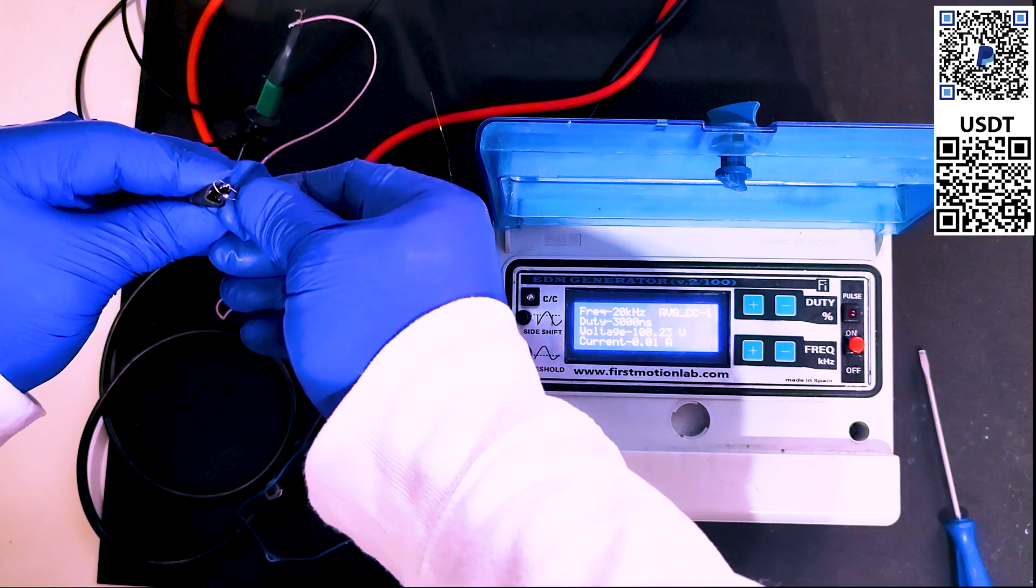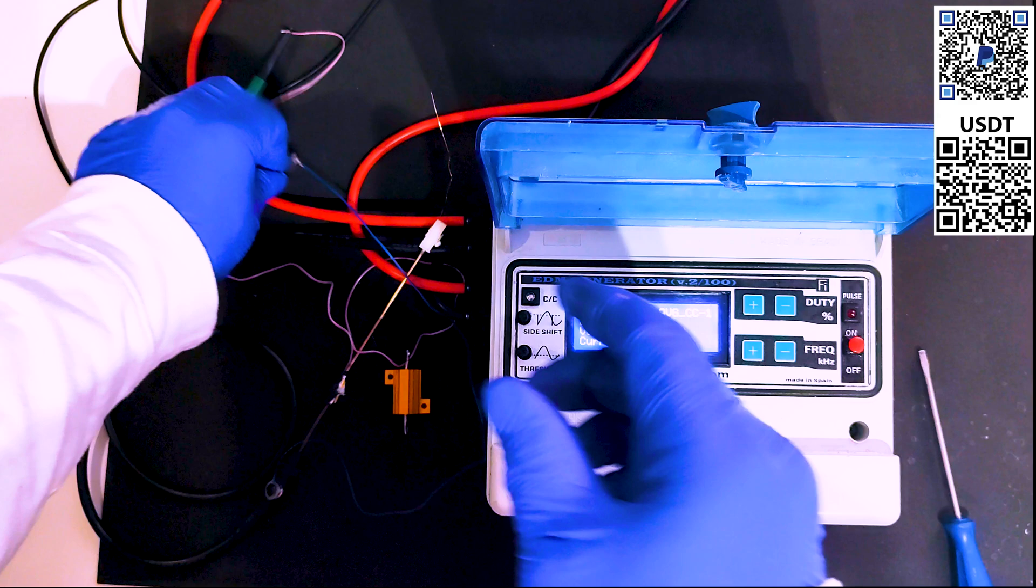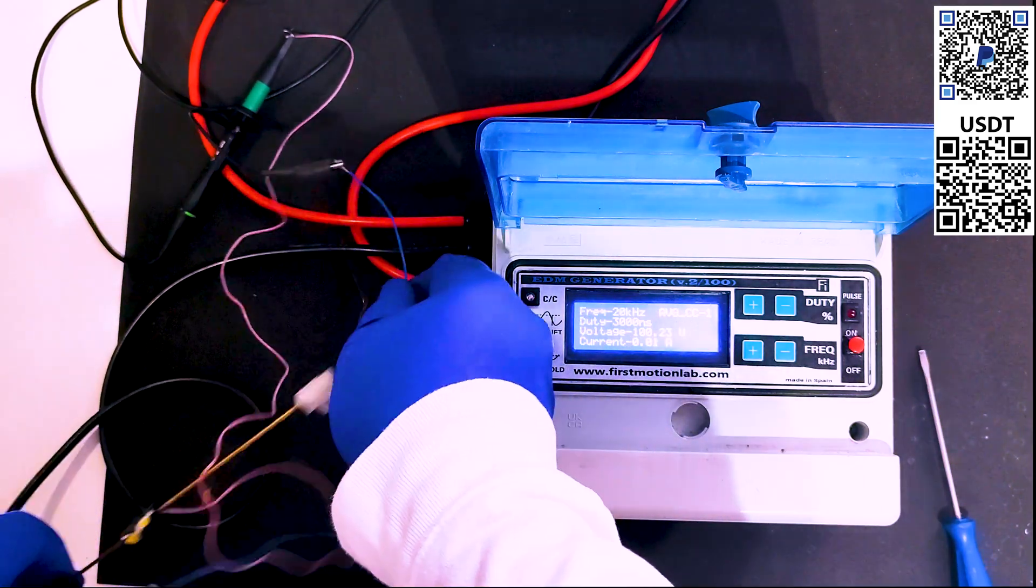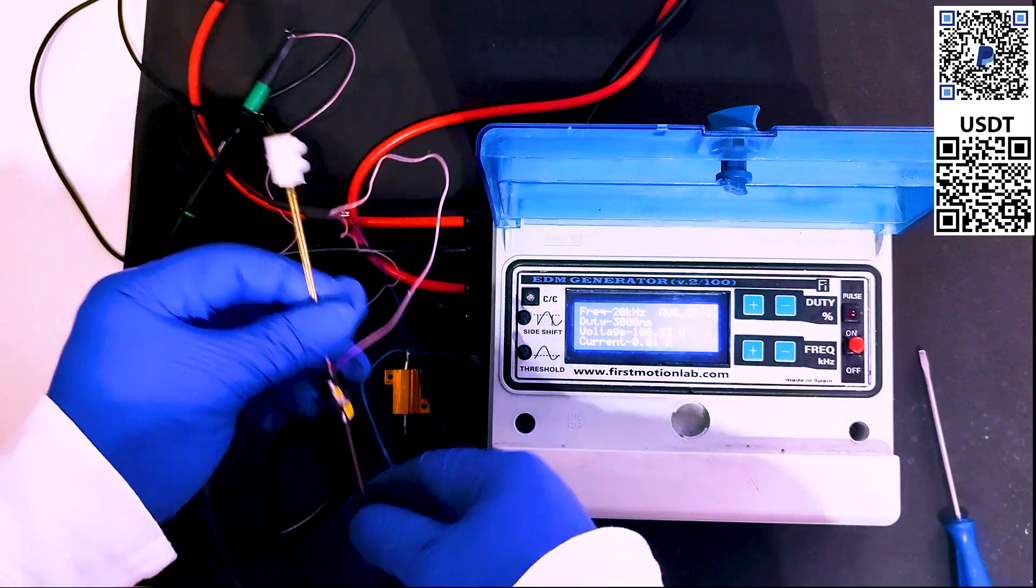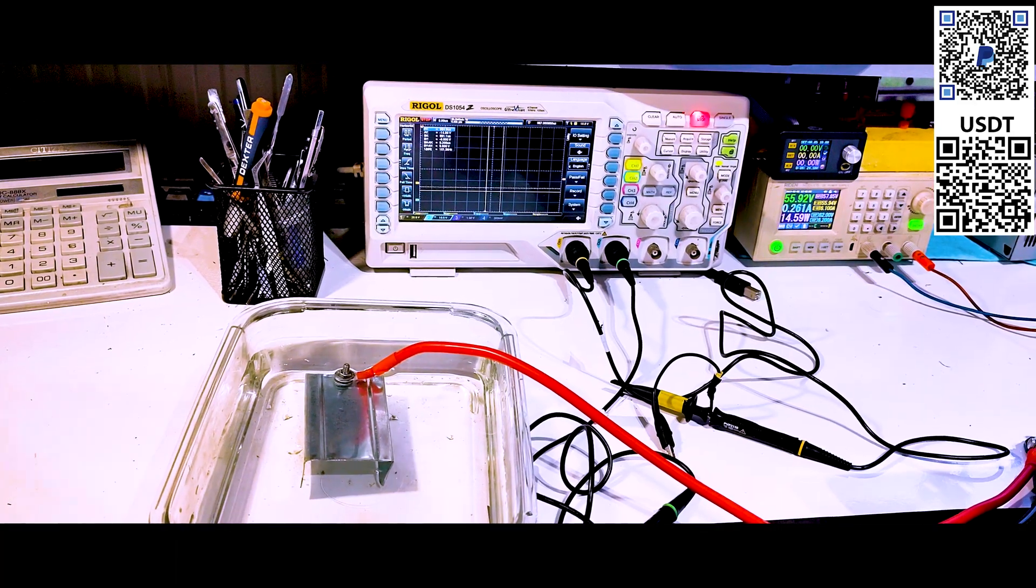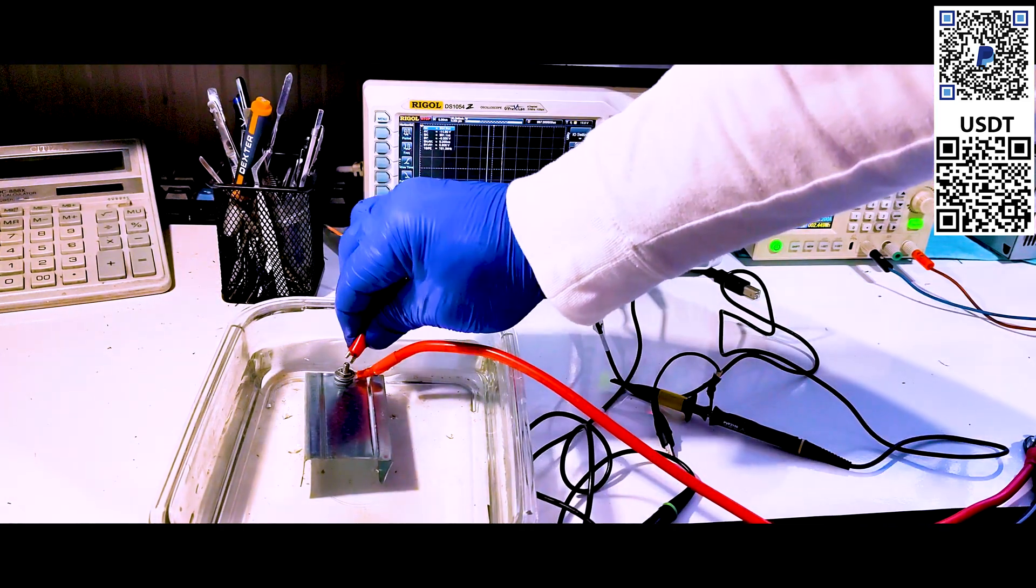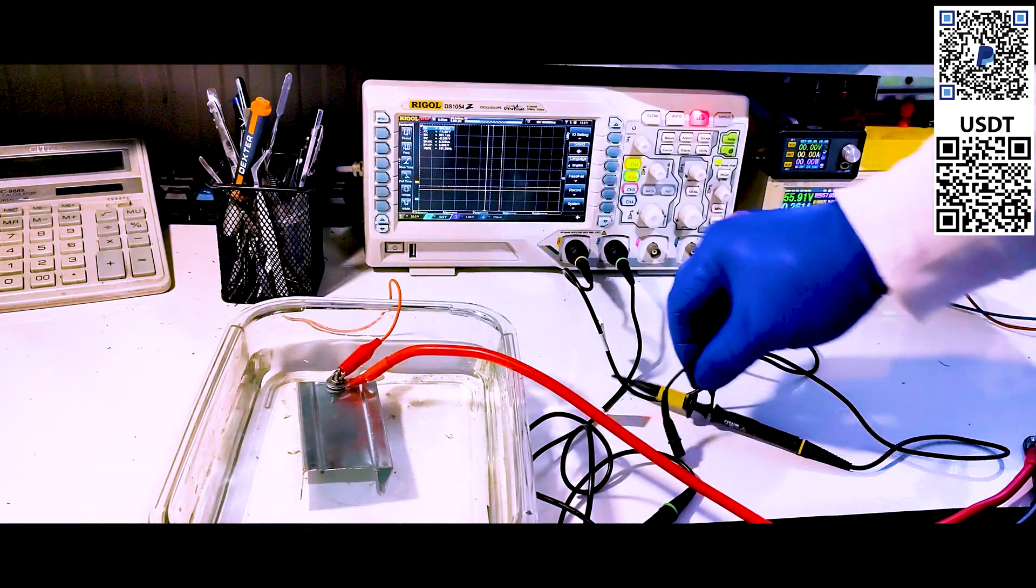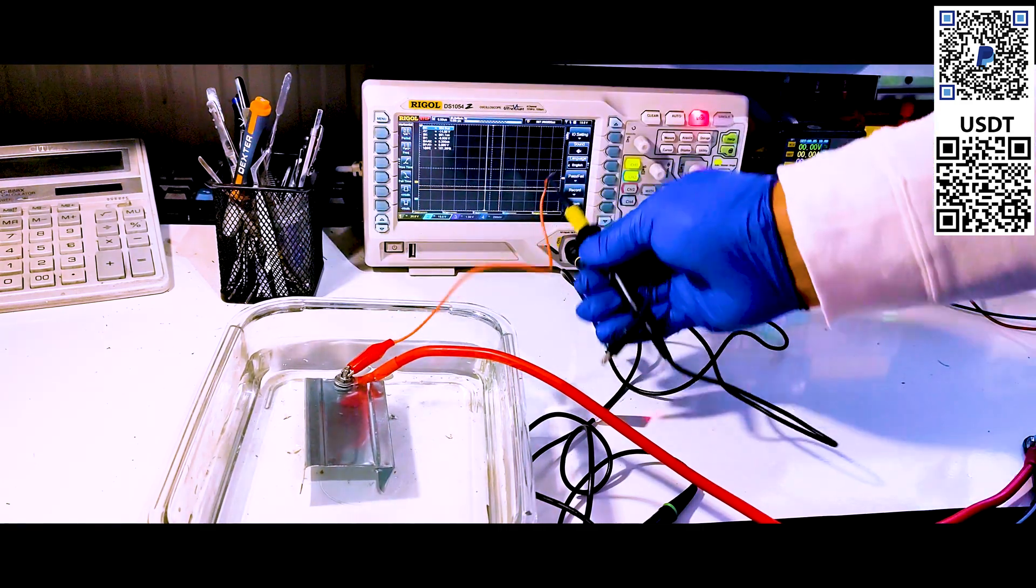By the way, the resistance of the manganin wire is 0.008 ohms. Okay, let's have a look at what we can see there. The second probe of the oscilloscope will connect to the high voltage line of the EDM generator.